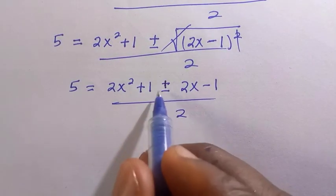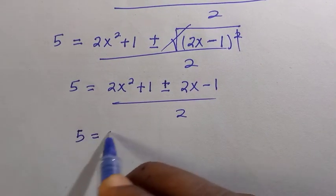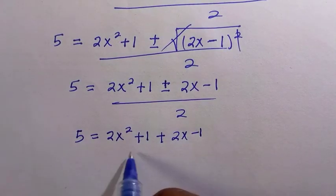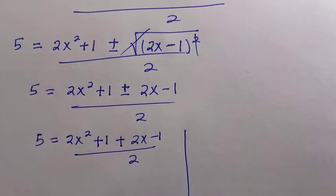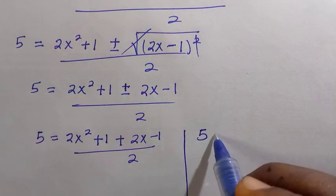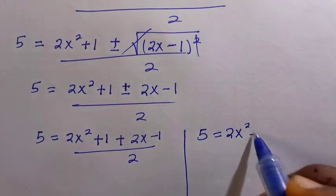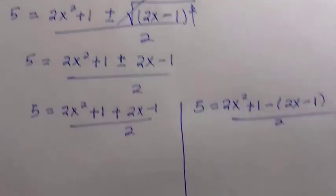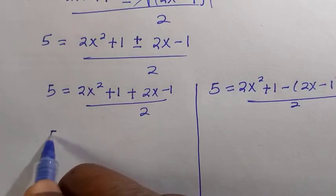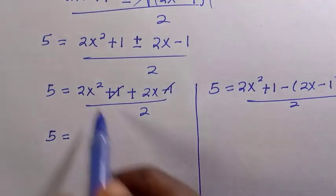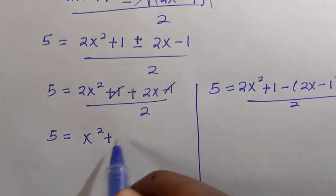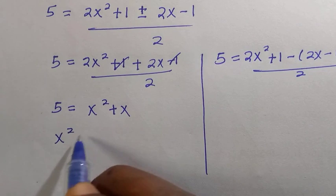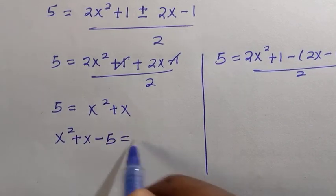Since we have plus or minus, we separate into two cases. For the positive case: 5 equals (2x² + 1 + 2x minus 1) divided by 2. The ±1 terms cancel, and dividing through by 2 gives x² plus x. Collecting like terms: x² plus x minus 5 equals 0.